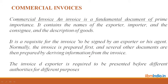The first document is the commercial invoice. The commercial invoice is a fundamental document of prime importance. It contains the name of the exporter, importer, and consignee, and the description of the goods. It is requisite for the invoice to be signed by the exporter or his agent. Normally, the invoice is prepared first, and several other documents are then prepared by deriving information from the invoice.